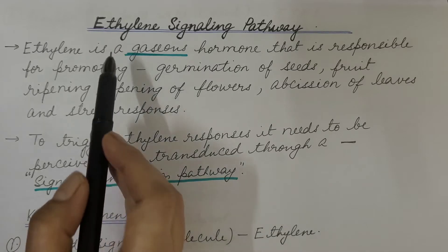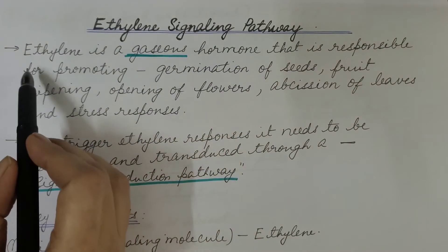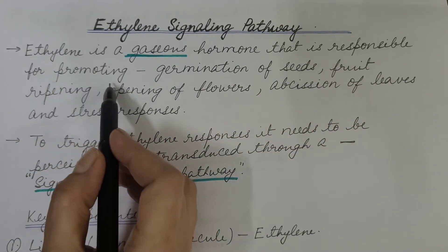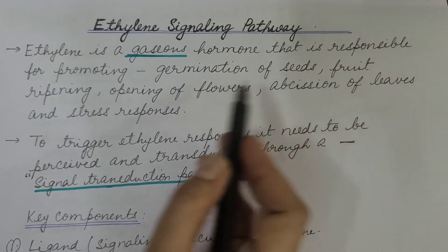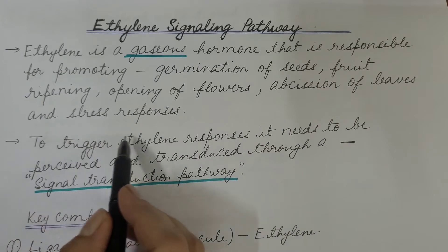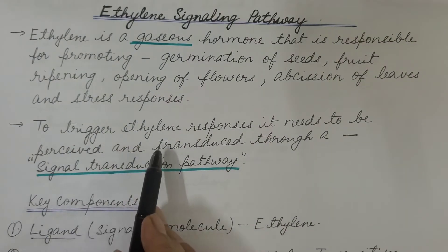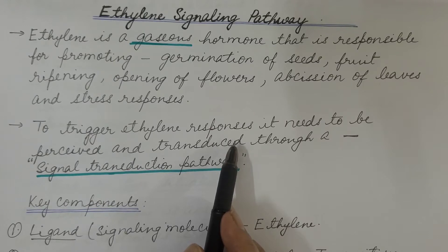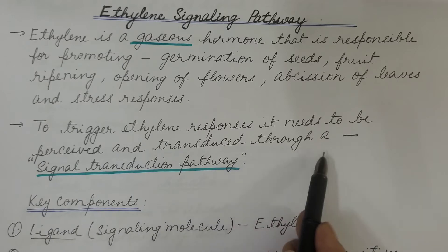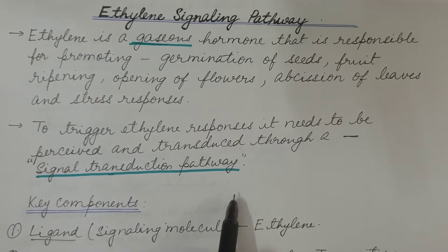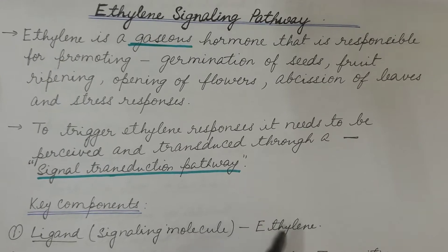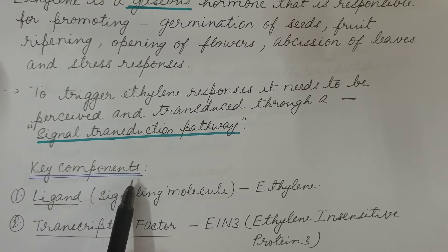In this video we are going to discuss about the ethylene signaling pathway. We know that ethylene is a gaseous hormone responsible for promoting germination of seeds, fruit ripening, opening of flowers, abscission of leaves, and stress responses. To trigger ethylene responses or its physiological effects, it needs to be perceived and transduced through a signal transduction pathway.